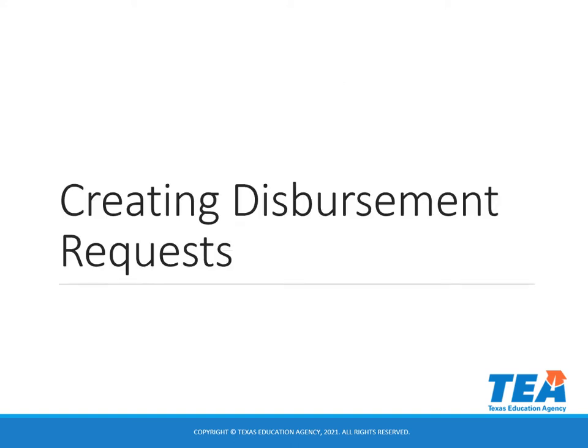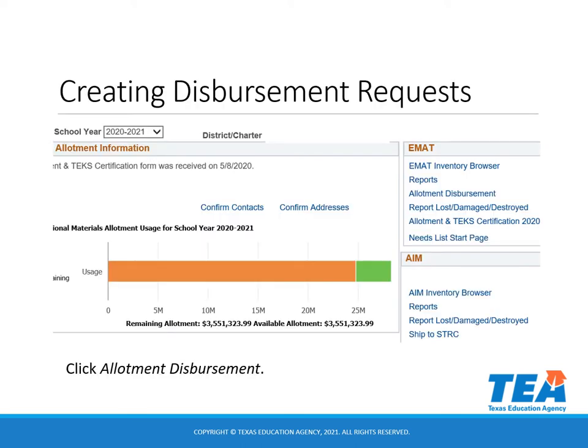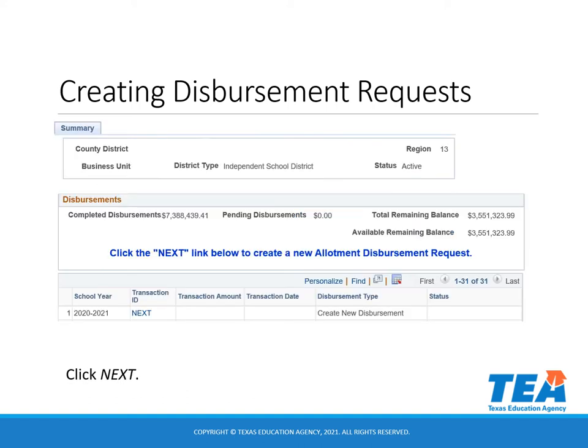Creating disbursement requests. To create an allotment disbursement, you will log into TEAL and choose the EMAT application. On your District Start page, click on Allotment Disbursement in the EMAT box. Click the next link on line one to create a new allotment disbursement request. If this link is not available, you will need to complete your prerequisites.